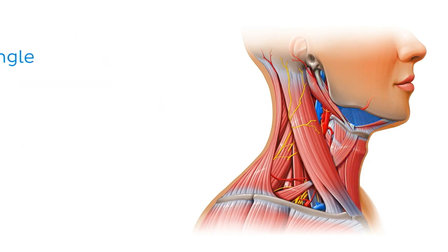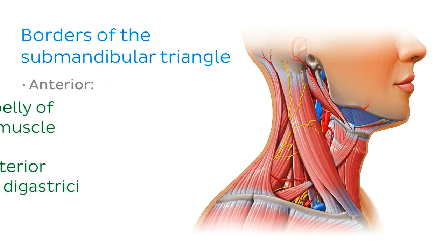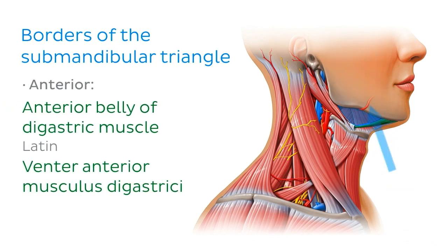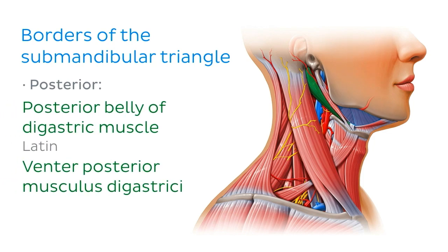Let's now have a look at the submandibular triangle, which is situated inferior to the mandible, where the submandibular glands are located, just as the name suggests. The triangle is bordered superiorly by the mandible, and the anterior and posterior bellies of the digastric muscle.